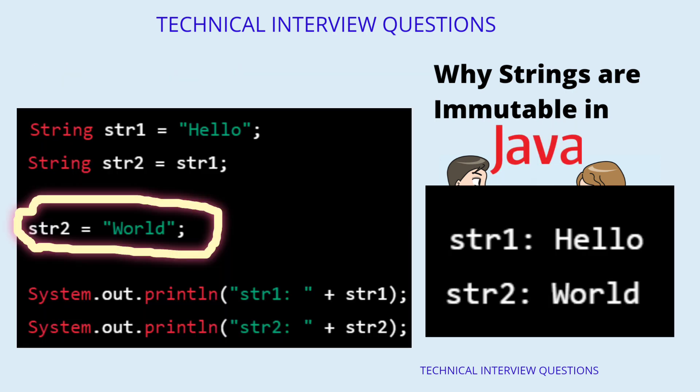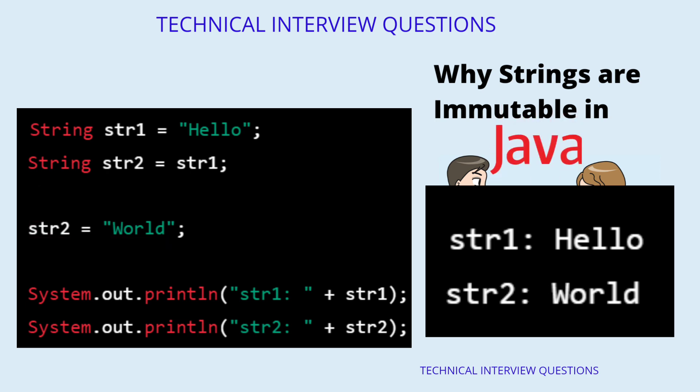In this example, when the value of str2 is changed to "world", a new string object is created in the heap memory and the reference stored in the str2 variable is updated to point to this new object. The original string object, "hello", is not modified, and the str1 variable still points to it.